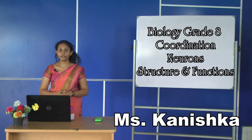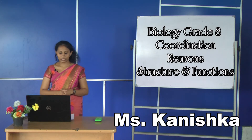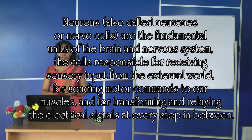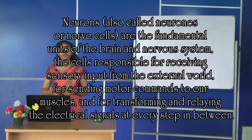So what are neurons? Neurons are the specialized cells of the nervous system that transmit signals throughout the body. This signal is transmitted in the form of nerve impulse.